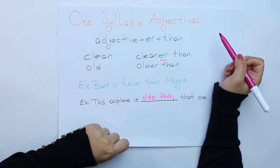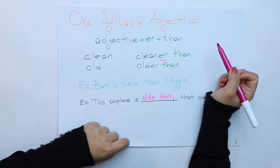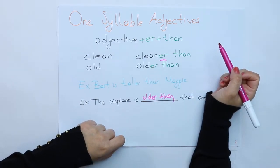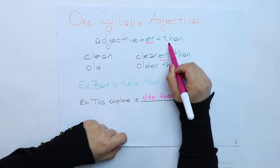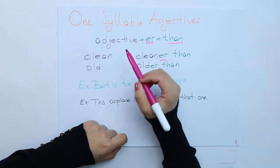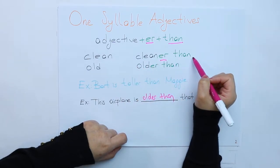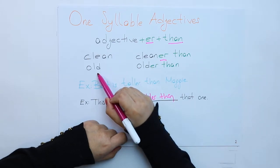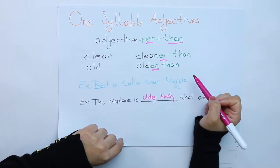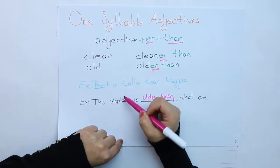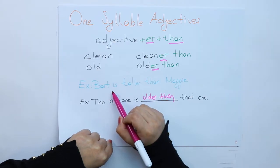Now we will talk about adjectives which have just one syllable. If my adjective has just one syllable, I put ER and then. First example: clean, cleaner than. Old, older than.